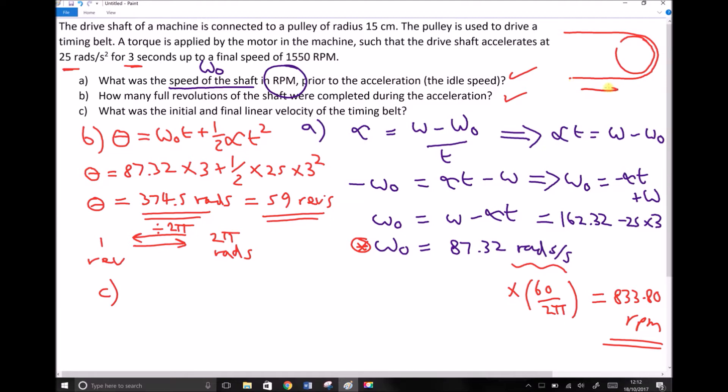Well, that timing belt is going to have a linear velocity. It's traveling in a linear direction. Now fortunately, the equations for converting between linear and angular movement are very straightforward.